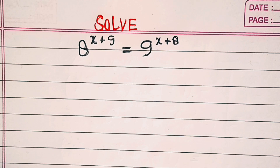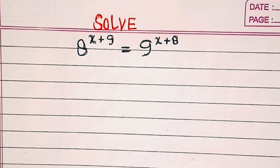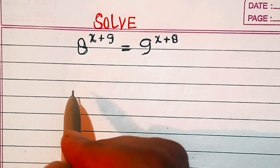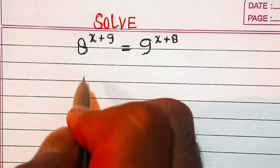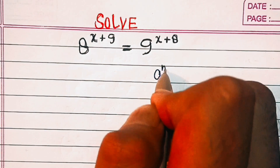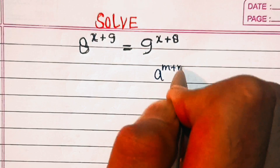Hi everyone, welcome to Think and Derive. In this video we will discuss 8 power (x+9) equal to 9 power (x+8). So let's try it out. First of all, remember that a power (m+n) is equal to a power m into a power n.